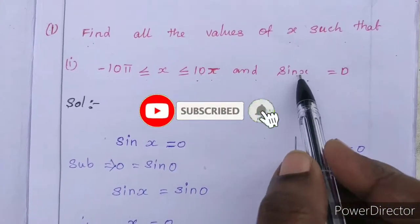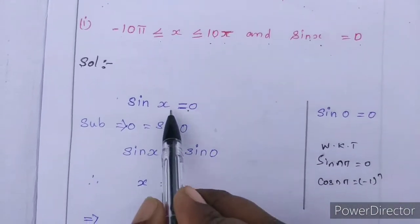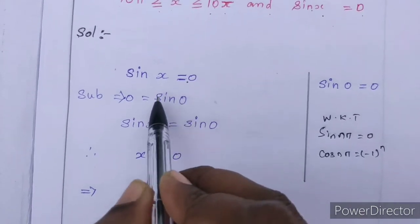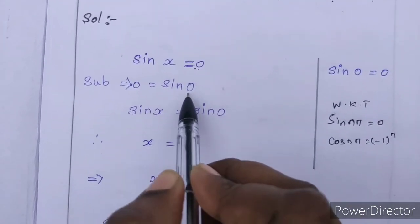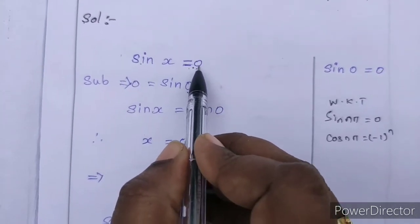So given that sin x = 0, that's what we have written first. We are writing sin x = 0.